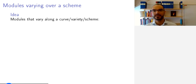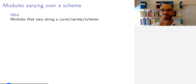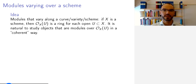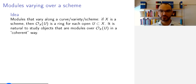Geometrically, the idea is that given a curve, a variety, or more generally a scheme, you want to have modules over the scheme that vary depending on where on the scheme you are, but do so in a coherent way. More specifically, the ring OX of U is given by the structure sheave for any open subset U of X, and so you want to study objects that are modules over this ring in a coherent way.